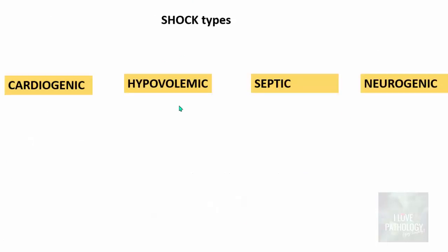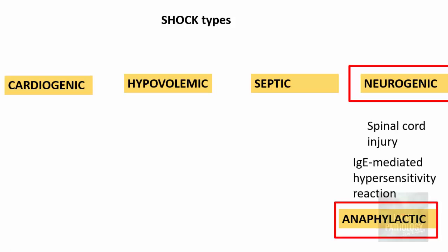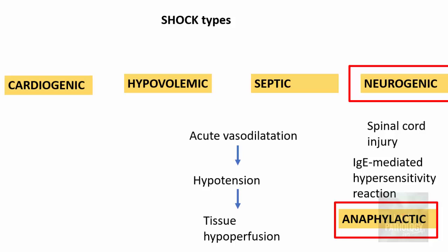Another type of shock is neurogenic shock, which is seen in spinal cord injuries. There is also anaphylactic shock, which is an IgE-mediated hypersensitivity reaction. In both these types of shock the underlying mechanism is the same — there will be acute vasodilatation leading to hypotension, and hypotension leading to tissue hypoperfusion and shock. So we now know the different types: cardiogenic, hypovolemic, septic, neurogenic, and anaphylactic shock.